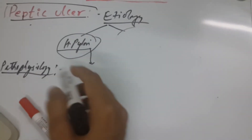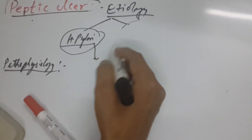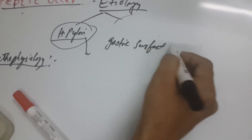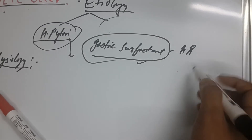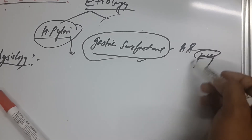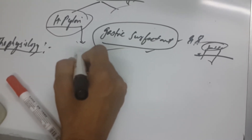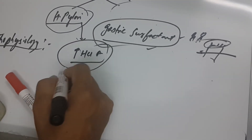Now, how does H. pylori cause peptic ulcers? H. pylori is a bacterium that lives and feeds in the stomach. It feeds on the gastric surfactant, which is composed of phospholipids. If H. pylori eats this gastric surfactant, there is no mucosal barrier, leaving the epithelium more prone to acid exposure. H. pylori also increases acid production.